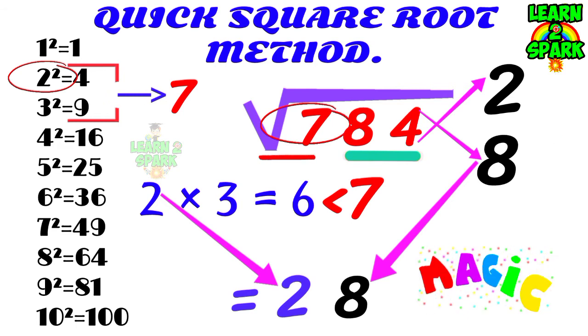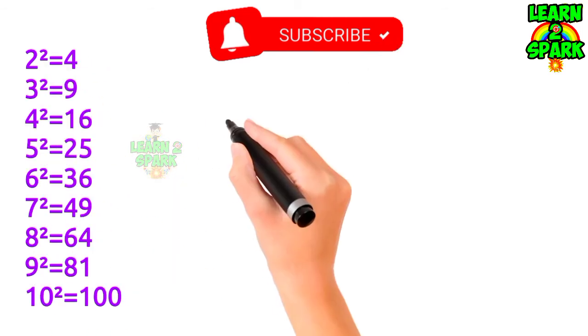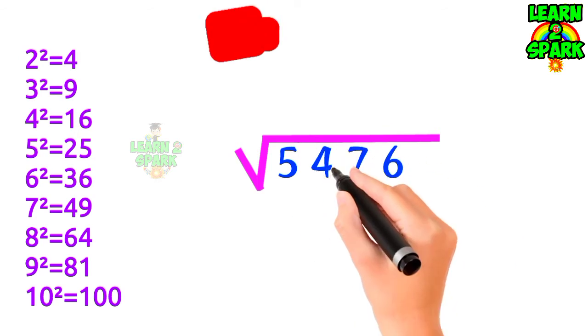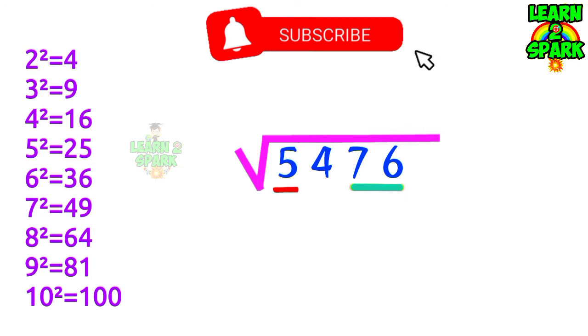Isn't that a magic? Let's check out another sum. If you memorize the squares of the natural numbers, you could do it even more faster. Let's use a 4 digit number. Split up into 2 groups, last 2 digits in one group and remaining in another.